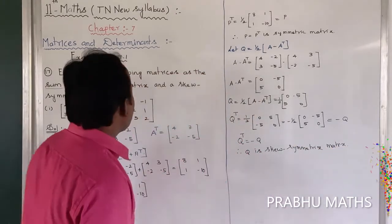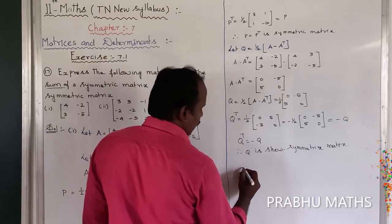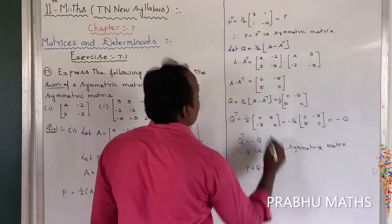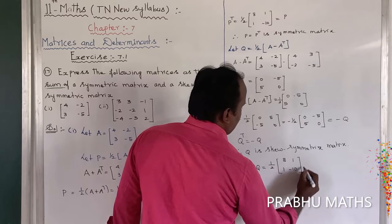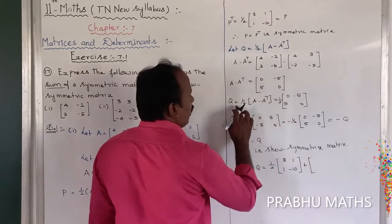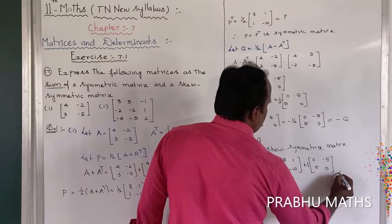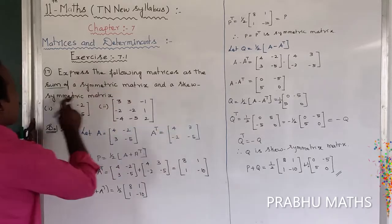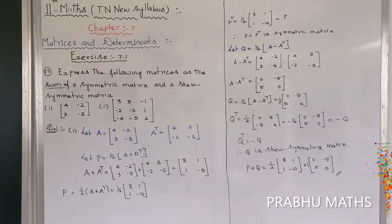Therefore, the given matrix is expressed as the sum of a symmetric matrix and a skew-symmetric matrix. P plus Q equals 1/2 into [[8, 1], [1, -10]] plus 1/2 into [[0, -5], [5, 0]]. That is the sum of the symmetric matrix P and the skew-symmetric matrix Q.